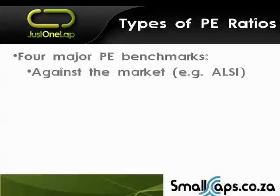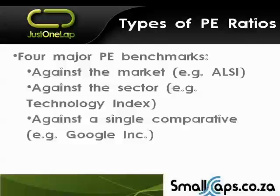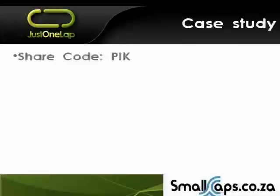There are four major PE benchmarks. You're measuring it against the market — on the JSE, this would be the ALSI. You're measuring it against the sector in which it's trading; for example, a technology stock measured versus the technology index. Then you measure it against a single comparative, local or international. And then you're actually measuring it against itself — against its history, the average price-earnings over the last 10 years or wherever. Be careful, though: you have to make sure the business model itself hasn't changed over that period. We will touch on this tonight in our case study on Pick and Pay.